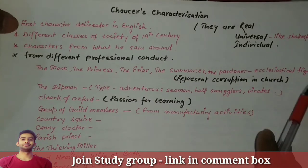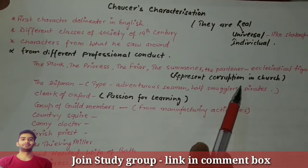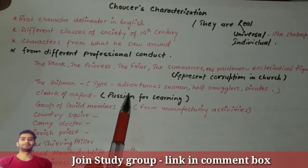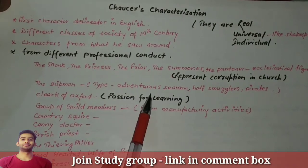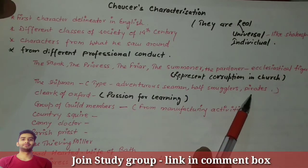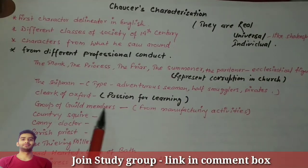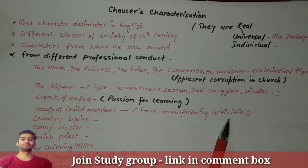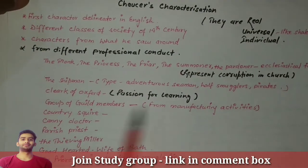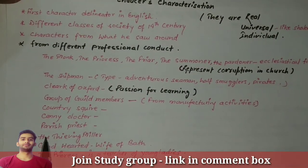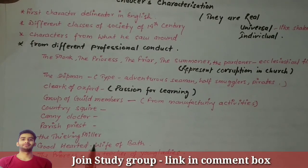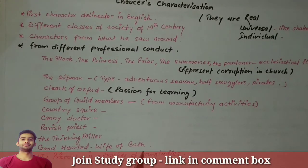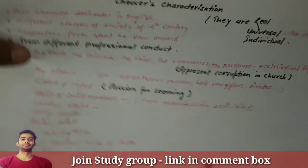These were ecclesiastical figures and they represent corruption in the Church. The Shipman was a type of adventurous seaman, half smuggler and pirate. The Clerk of Oxford had a passion for learning. There was a group of guild members from manufacturing activities, a country Squire, a canny Doctor, a Parish Priest, the thieving Miller, the good-hearted Wife of Bath, and the Prioress who is a teacher of young ladies. In the next video, we will be talking about all these characters.